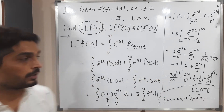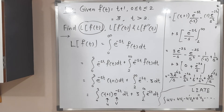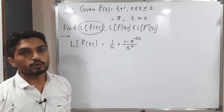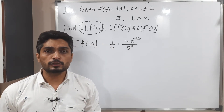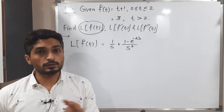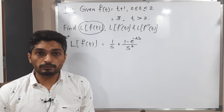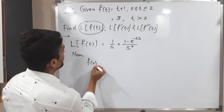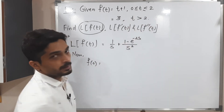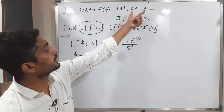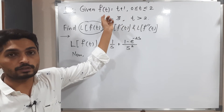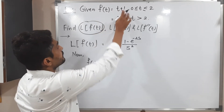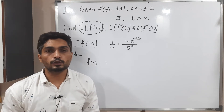Now we have to find Laplace of f-dash of t. The formula for Laplace of f-dash of t requires f of 0. Since 0 lies in the interval 0 to 2, we follow the first definition f of t equals t plus 1. Putting t equals 0, f of 0 equals 0 plus 1, which is 1.